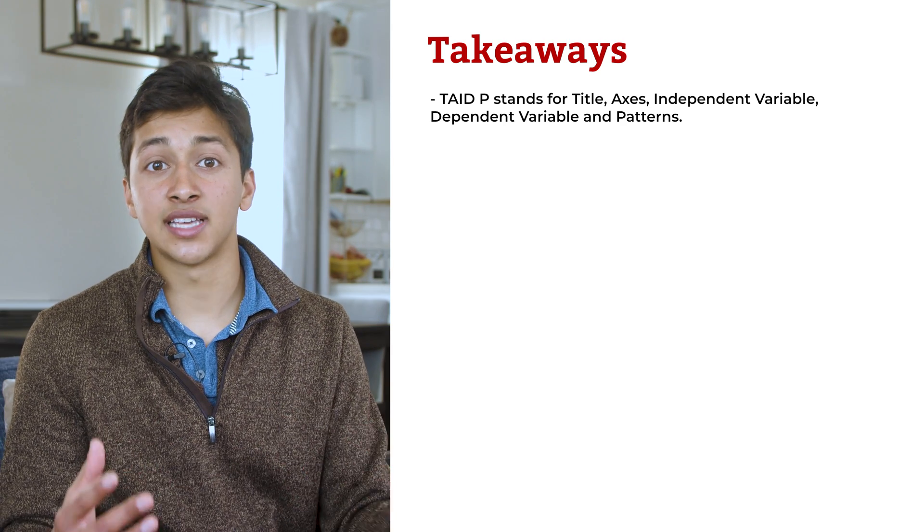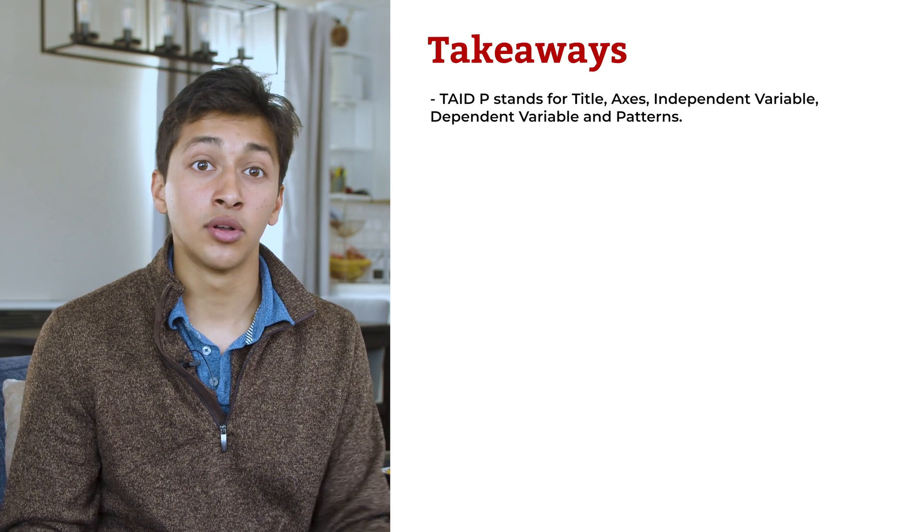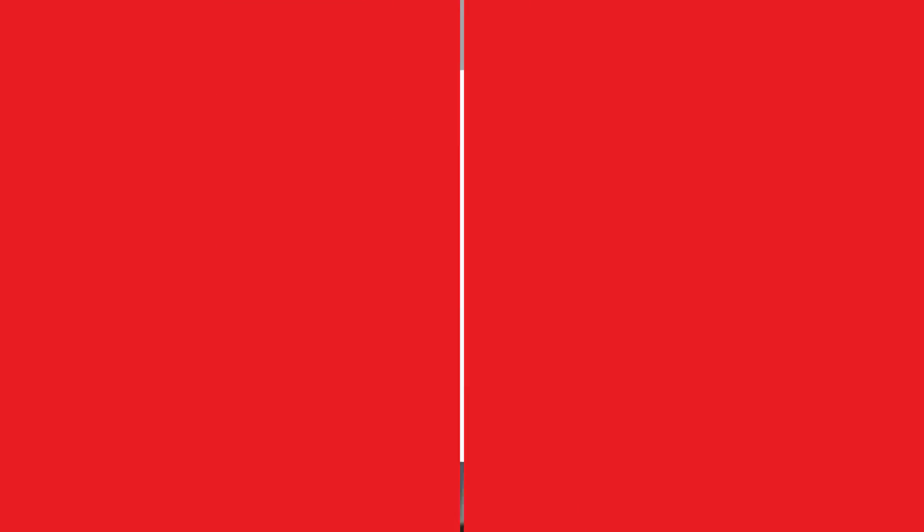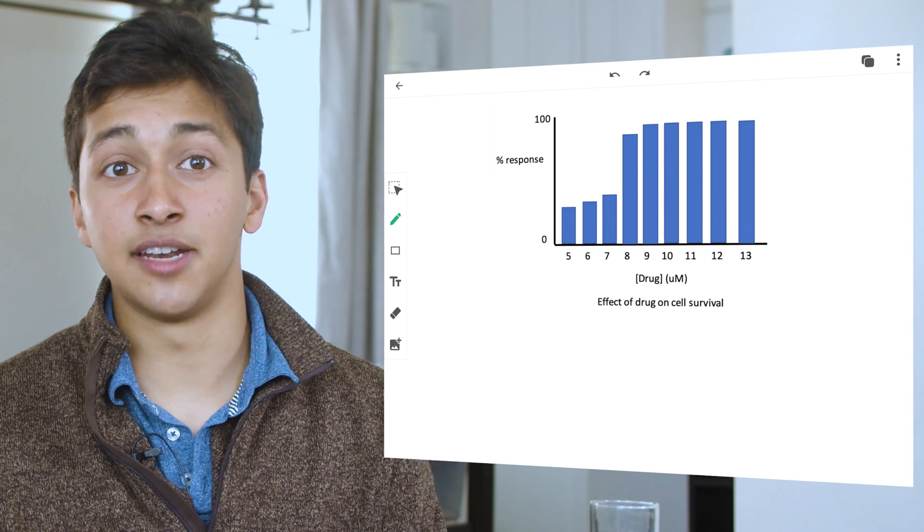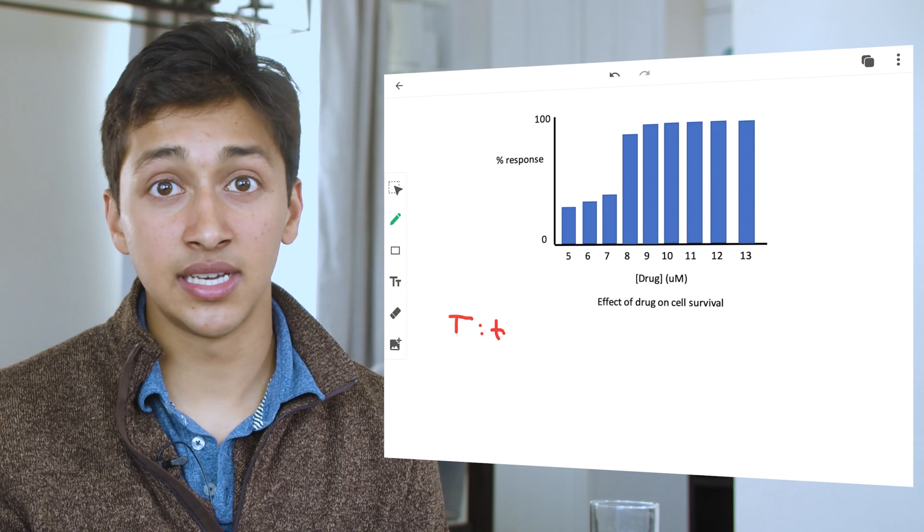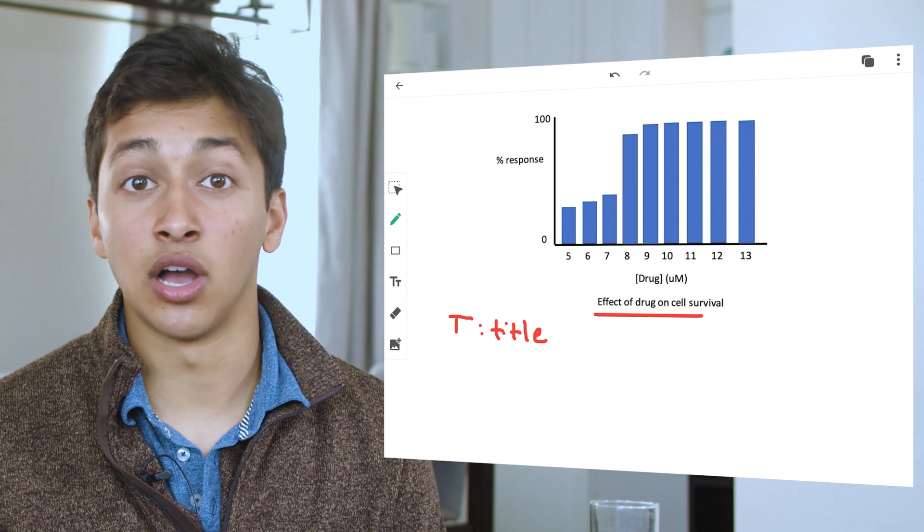If you can identify these elements in a graph, figure, or table, you will be able to understand what the data is telling you. Let's look at this example using the TAIDP method. The title, T, states effect of drug on cell survival. So we can determine that the researchers are treating cells with a drug and measuring cell survival.